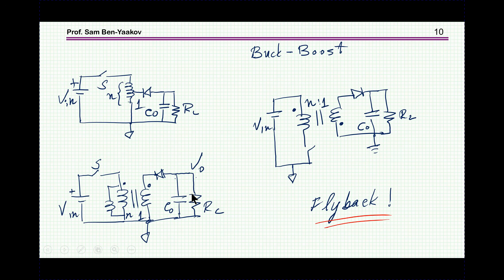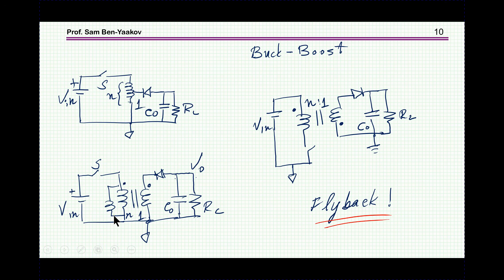What about a buck-boost? This is a tapped inductor buck-boost — the regular buck-boost has the diode connected in a standard way, but here I'm putting the connection to a midpoint. Defining N and N1, and replacing it with a two-winding transformer with the inductance, if you look at it and redraw the circuit, it is just a flyback. So a buck-boost with a tapped inductor is basically a non-isolated flyback.